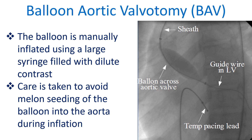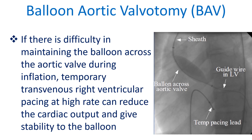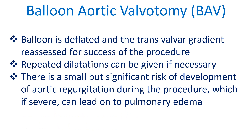The balloon is manually inflated using a large syringe filled with dilute contrast. Care is taken to avoid melon seeding of the balloon into the aorta during inflation. If there is difficulty in maintaining the balloon across the aortic valve during inflation, temporary transvenous right ventricular pacing at high rate can reduce cardiac output and give stability to the balloon. The balloon is then deflated and the transvalvular gradient reassessed for success of the procedure.